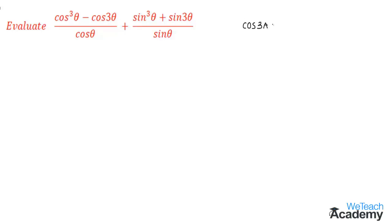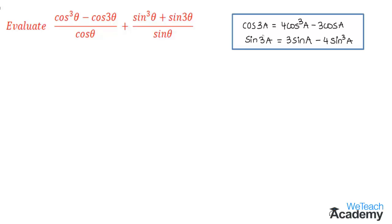We can use the formula cos 3a = 4cos³a minus 3cos a, and the formula sin 3a = 3sin a minus 4sin³a. Using these multiple angle formulas for cos and sin, let us replace the values of cos 3θ and sin 3θ.